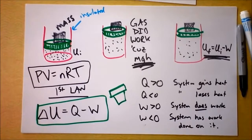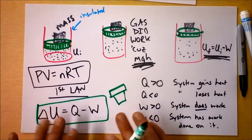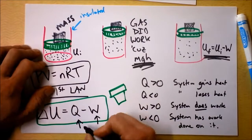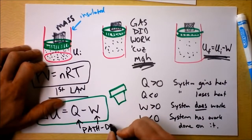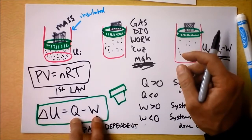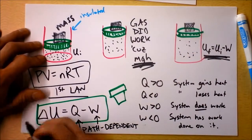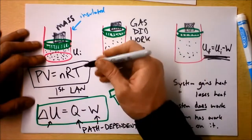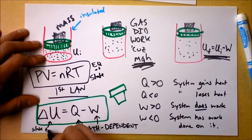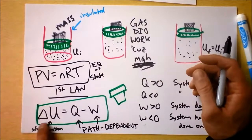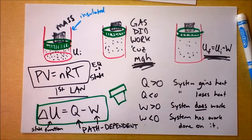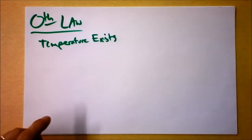That's about all I want to say about that. You need to think about this because it's a little more subtle than you think. Make sure you're clear on these definitions. Q and W are path-dependent — which is actually the reason that internal combustion engines can exist. But the internal energy U is not path-dependent; it's called a state function. PV = nRT is the equation of state, and U is a state function because it just depends on how the gas is at any instant.